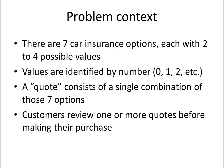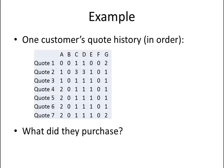There are seven car insurance options, each with two to four possible values. Those values are identified only by number, and a quote consists of a single combination of those seven options. Customers can review one or more quotes before actually making their purchase. Here's an example — this is one customer's car insurance quote history. You can see there are seven quotes, and for each quote there are seven different options, A through G, and you can see the values they chose for those options. The question is: what did they actually purchase?